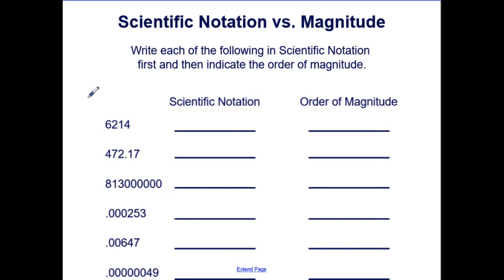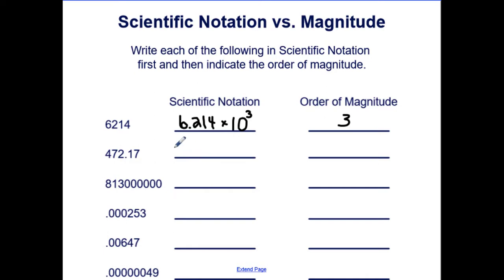Let's practice and write each of the following in scientific notation, then indicate the order of magnitude by looking at its exponent. 6214 in scientific notation would be 6.214 times ten to the third, making the order of magnitude three. Four hundred seventy two point one seven would be 4.7217 times ten to the second, making its order of magnitude two.